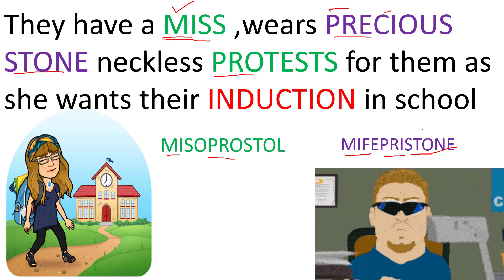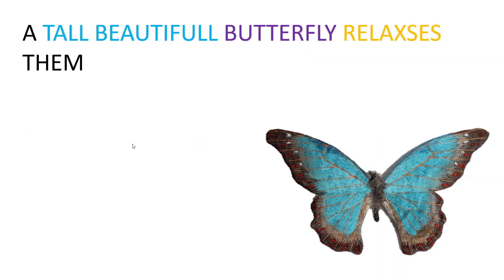So misoprostol and mifepristone are the two drugs also used for induction of labor. Miss protests — both drugs cause uterine contractions — and they want the induction of children in school, meaning they can be given in induction of labor. Very importantly, misoprostol or mifepristone, or both, are given only when there is intrauterine demise — fetal death. The miss wears a precious stone, and stone is a dead object, so these drugs are given in intrauterine demise (IUD).